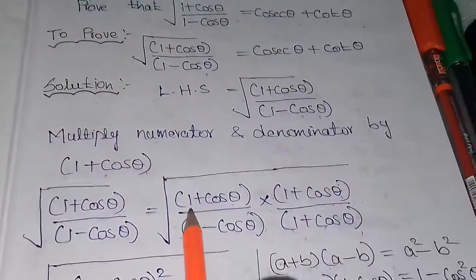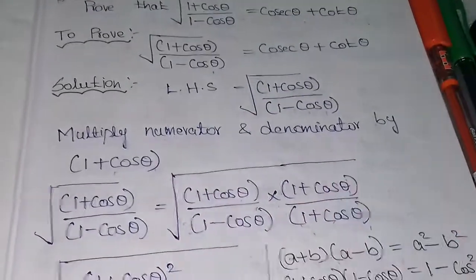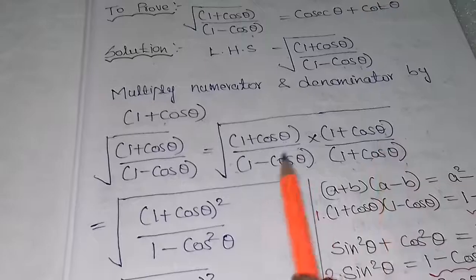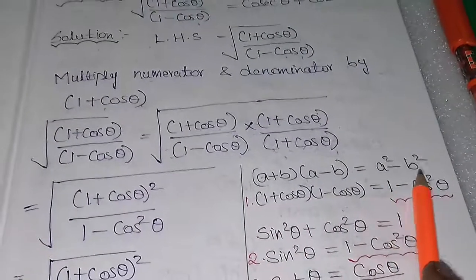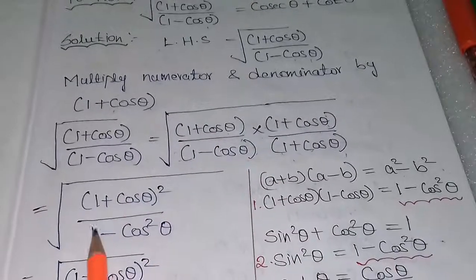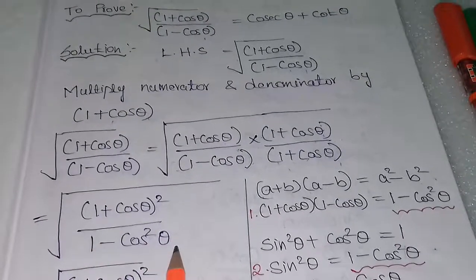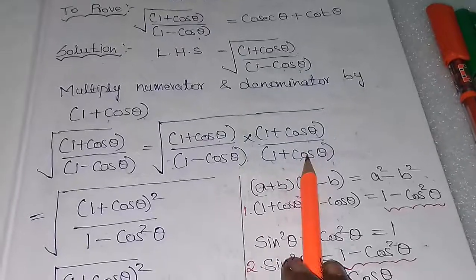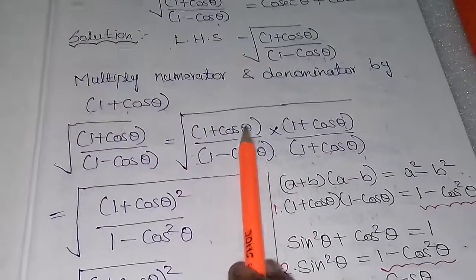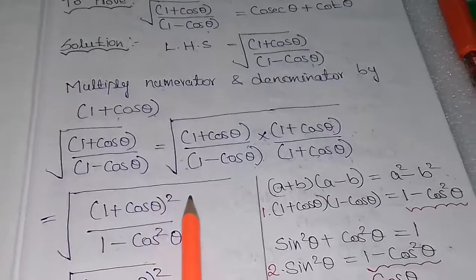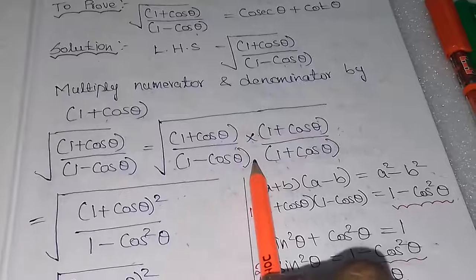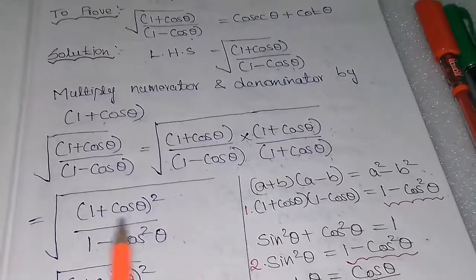Now we apply the identity (a + b)(a - b) = a² - b², where a = 1 and b = cosθ. So the denominator becomes 1² - cos²θ, which is 1 - cos²θ. The numerator is (1 + cosθ)(1 + cosθ), which equals (1 + cosθ)². So we have the square root of (1 + cosθ)² divided by (1 - cos²θ).